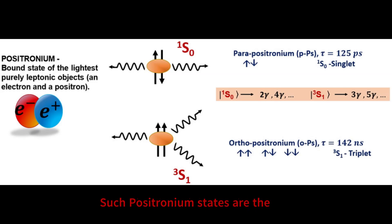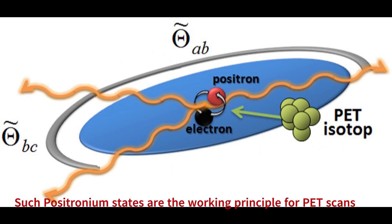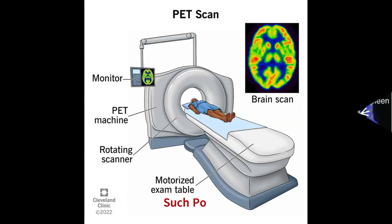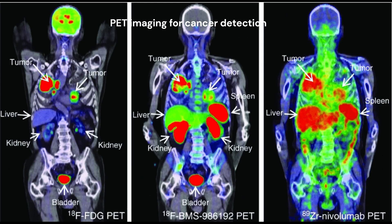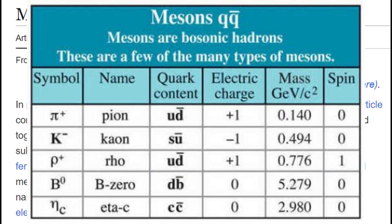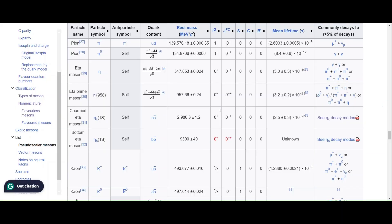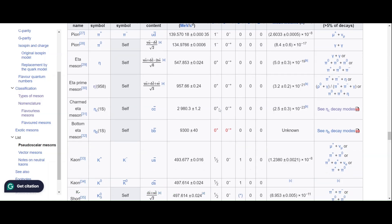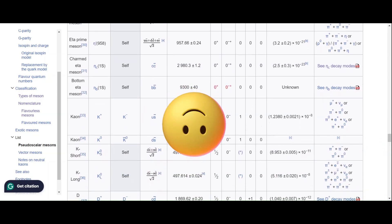Such bound states between matter and antimatter are much more common than you think. Most common of these bound states are called mesons where one quark and an anti-quark form a particle. Here you can see a non-exhaustive list of mesons. I am sure you knew all of them.